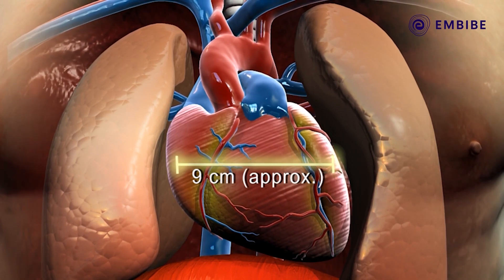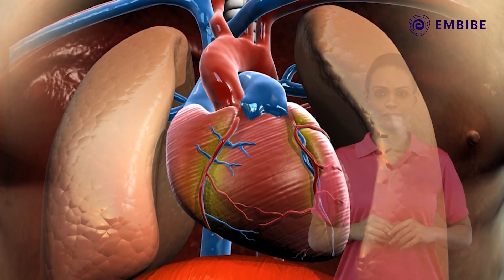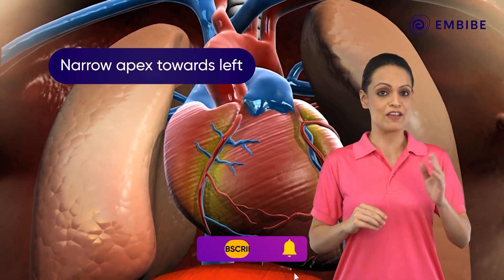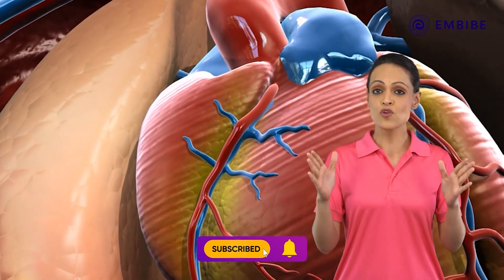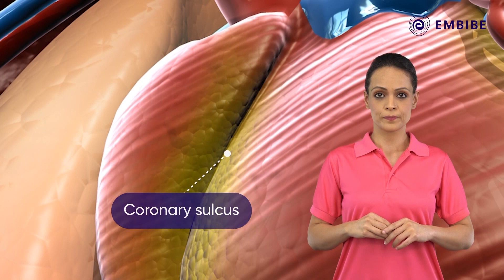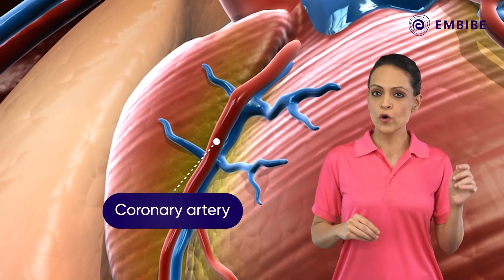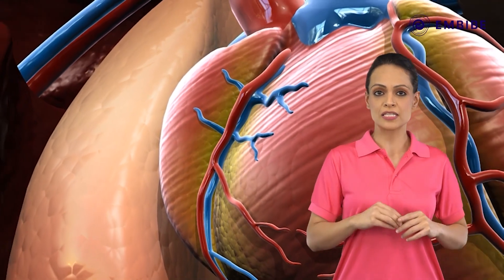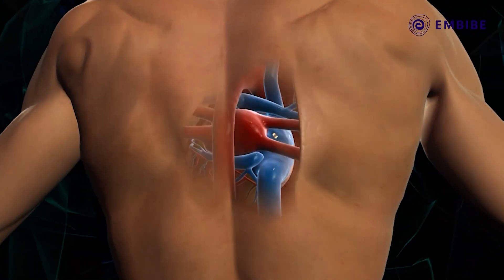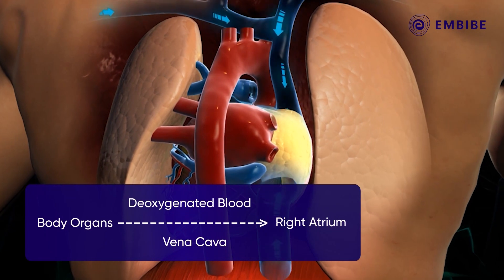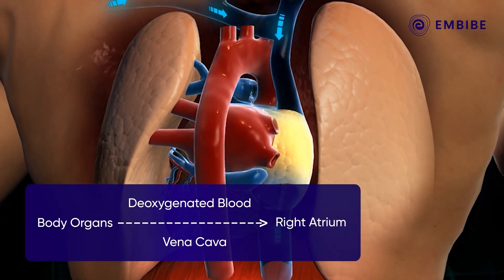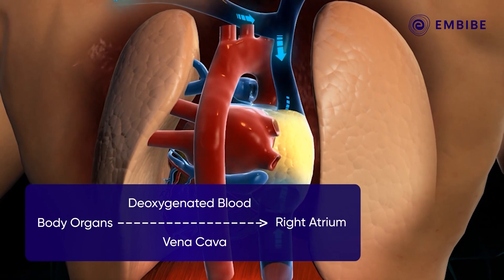The heart looks like a blunt cone, 12 centimeters in length and 9 centimeters in width at the broadest point. Its narrow apex is directed downwards, inclined to the left. There is a transverse groove called the coronary sulcus, where we find the coronary artery, through which the heart muscles receive blood.